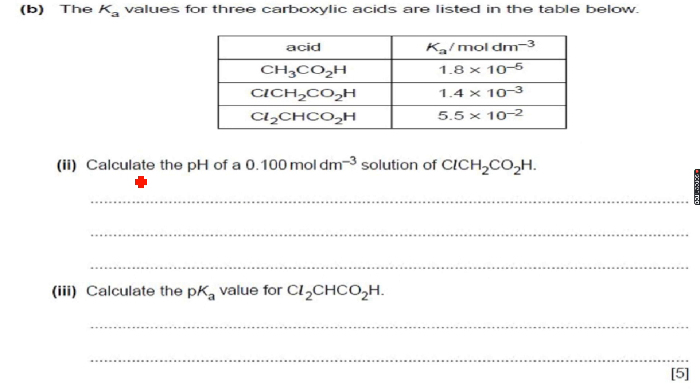So this says calculate the pH of a 0.1 mol per dm cube solution of 2 chloroethanoic acid which is the second one. So we have to calculate the pH.